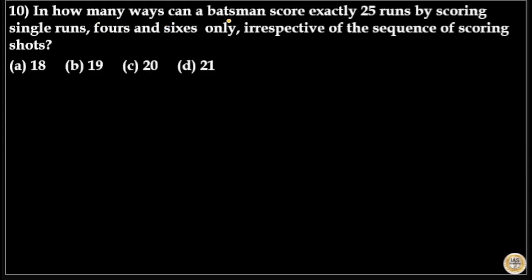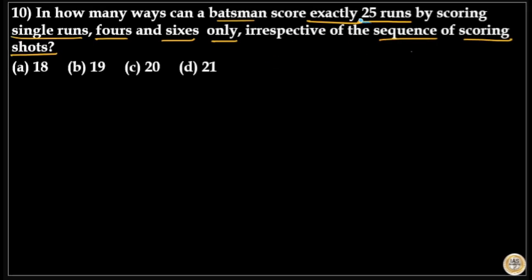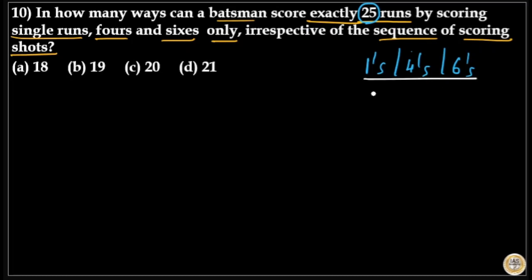In how many ways can a batsman score exactly 25 runs by scoring single runs, fours and sixes only, irrespective of the sequence of scoring shots? A batsman should score 25 runs either by scoring singles, fours, or sixes — all three together or any two combinations: ones and fours, fours and sixes, or ones and sixes. But he should exactly make 25 runs.